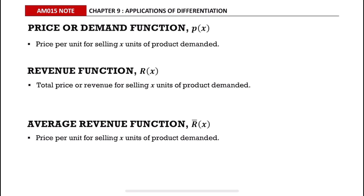The price or demand function is denoted as p(x). It is the price per unit for selling x units of product demanded. The revenue function is denoted as R(x) — it is the total price or revenue for selling x units of product demanded.